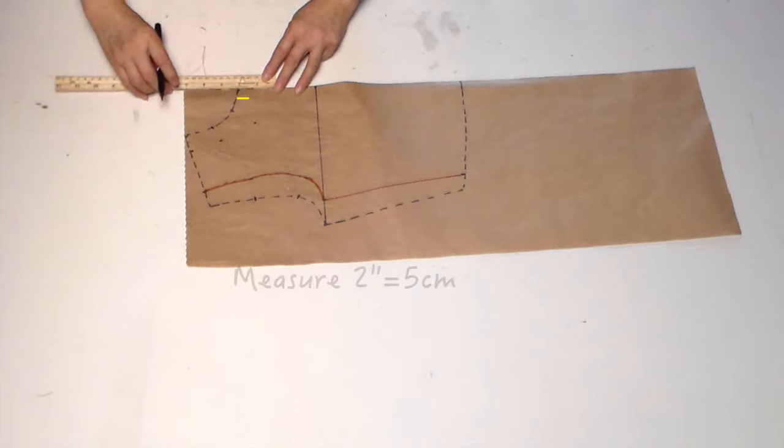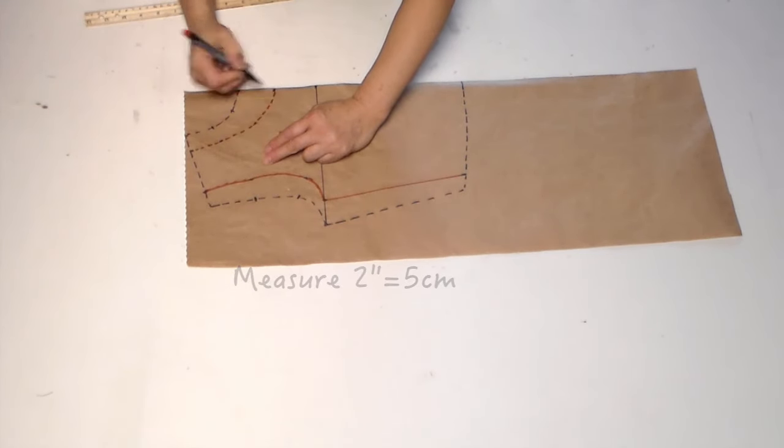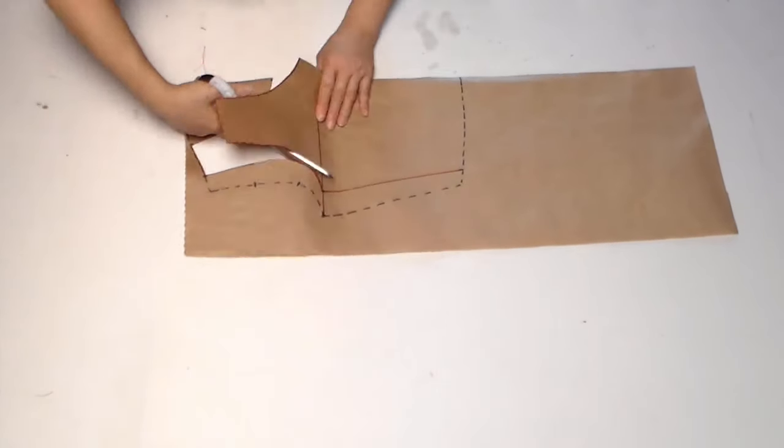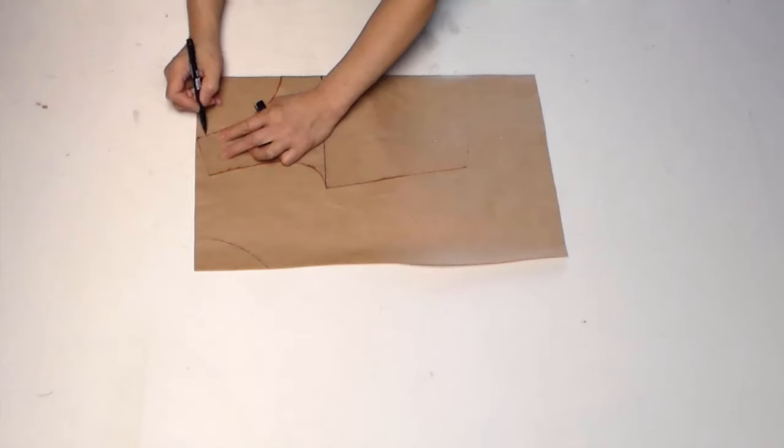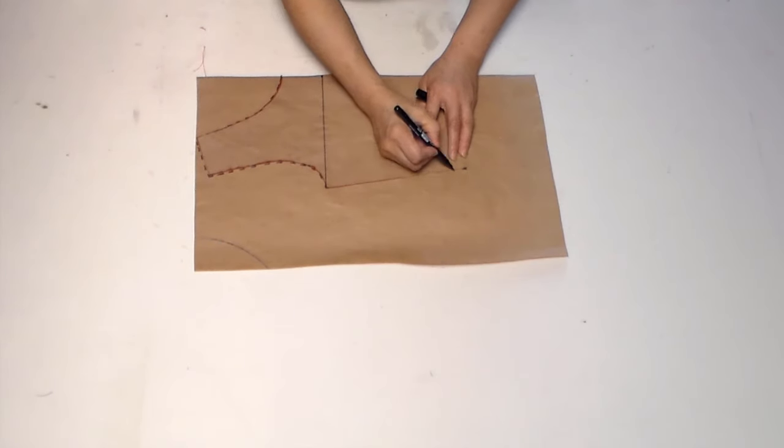Front, measure 2 inch down from basic pattern. Connecting all the points, make a new pattern line. Cut this pattern. You need one new piece of paper. Copy this front pattern on top of the new paper.